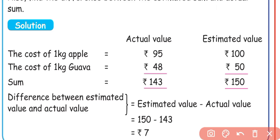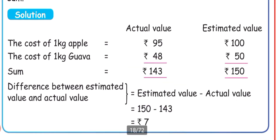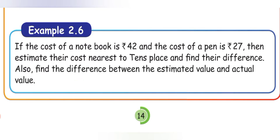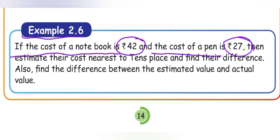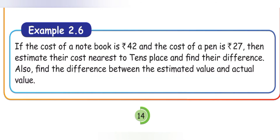The estimated sum: Rs. 100 plus Rs. 50 is Rs. 150. The actual sum: Rs. 95 plus Rs. 48 is Rs. 143. The difference between the estimated sum and the actual sum is Rs. 150 minus Rs. 143, which equals Rs. 7.